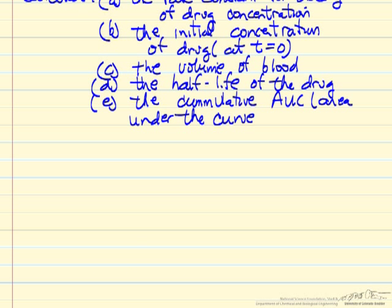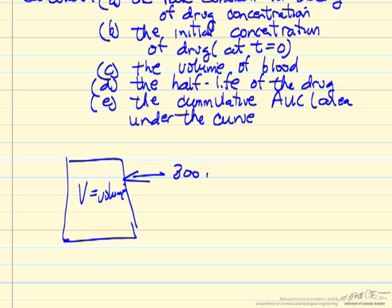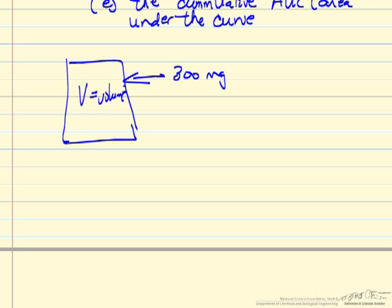So essentially we have something that we're modeling as a reactor, as a volume. We inject a certain amount of drug, in this case 300 mg. The concentration of the drug decreases with time and we want to analyze that data. One approach would be to guess what the behavior is.